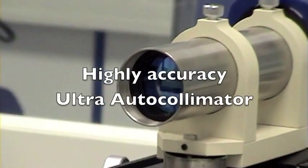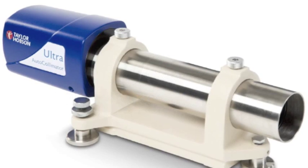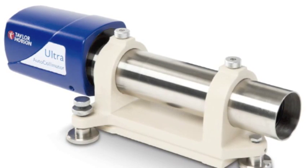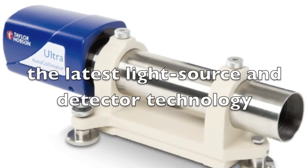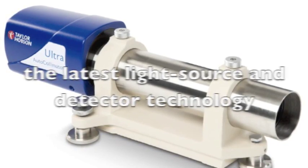Now we move to the high accuracy digital ultra autocollimators. These are highly versatile systems using the latest light source and detector technology to provide dual axis operation with high accuracy digital display.